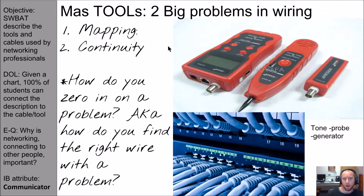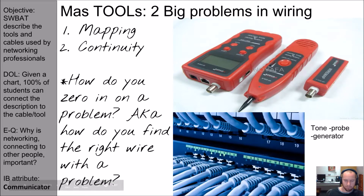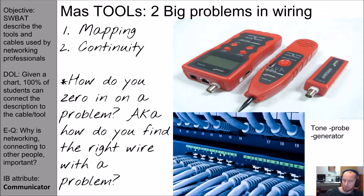Once your cable is wired up and hooked up, there are two big problems that can occur. The first is a mapping problem and the second is a continuity problem. To zero in on these problems, this tool — a tone probe generator — is pretty nifty. You take a cable, plug one end into the device, then on the other side of the building take the generator close to different wires. As soon as the tone goes off, you know you're looking at the right cable.